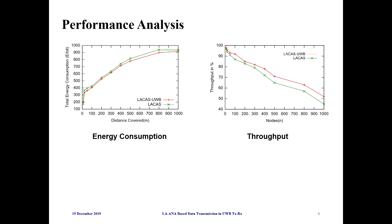In the performance analysis, regarding energy consumption compared to local automata without any autonomicity, my energy consumption was reduced by 10 percent compared to the previous LACA environment, and the throughput was increased by 17 percent in the LACA UWB environment.